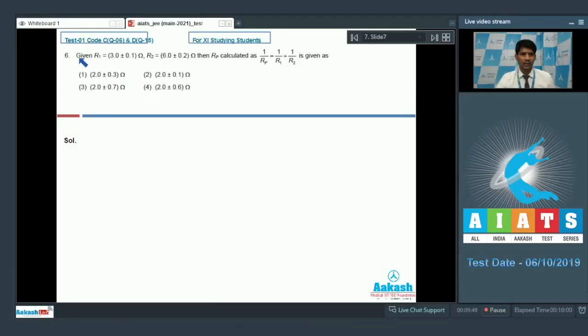Question number 6: given R1 is equal to 3.0 plus minus 0.1 ohm, R2 is equal to 6.0 plus minus 0.2 ohm, and Rp calculated as 1 by Rp is equal to 1 by R1 plus 1 by R2.